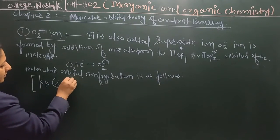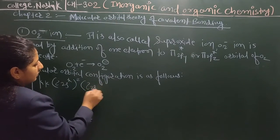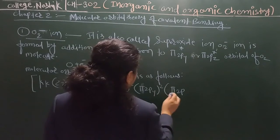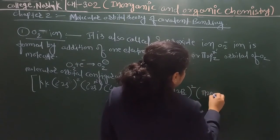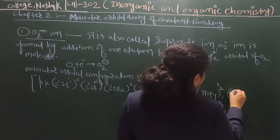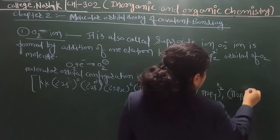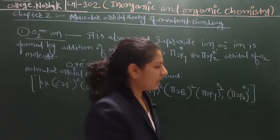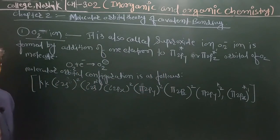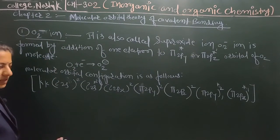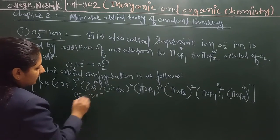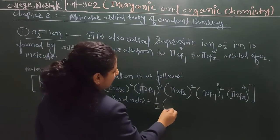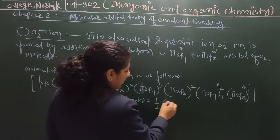The molecular orbital electron configuration is: sigma 2s squared, sigma 2px squared, sigma 2py squared, pi 2p squared, pi 2p zero, then pi 2p one in anti-bonding molecular orbital, and pi 2pz one also in anti-bonding molecular orbital. In the pi 2pz orbital there is only one electron, so this is an unpaired electron in the anti-bonding molecular orbital.